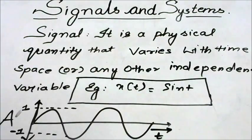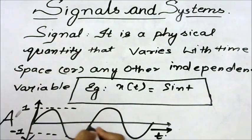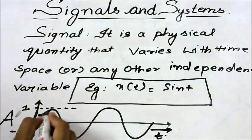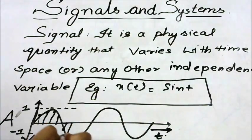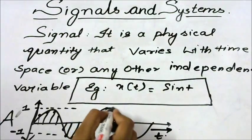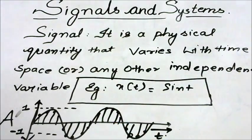Hi, welcome to the video tutorials on signals and systems. A signal — what is a signal? It is a physical quantity that varies with time, space, or any other independent variable. For example, let us consider a sine wave. It varies with time t. This is called the time axis and this is called the amplitude axis. The information may be in the form of an audio wave or video wave, and it travels along the time axis. This is what you call a signal.